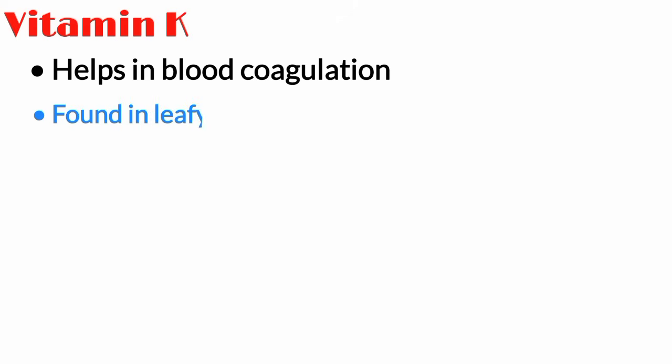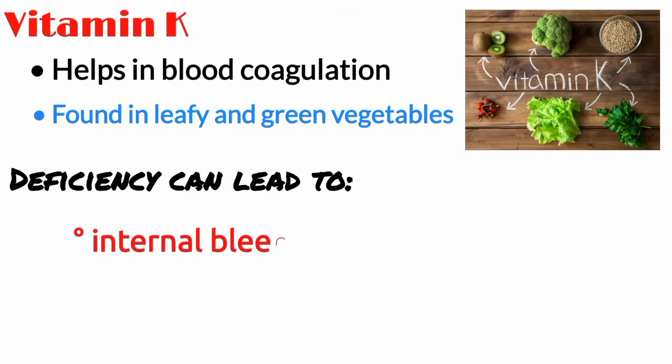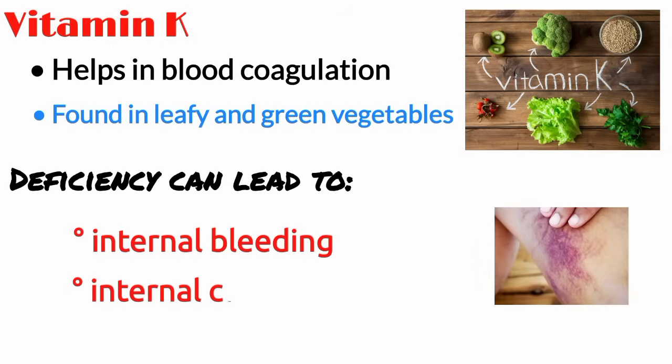It is found in leafy and green vegetables like cabbages, kale, spinach, broccoli. The deficiency of vitamin K can lead to serious internal bleeding and internal clot formation.